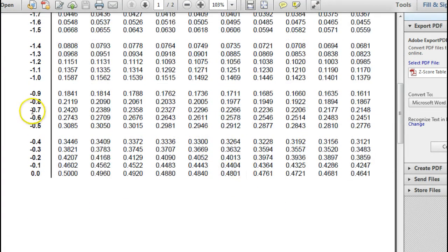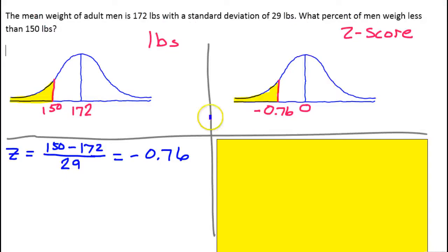This is negative 0.70, 0.71, 0.72, 0.73, 0.74, 0.75, 0.76. So this is the percentage of values to the left of this z-score. As a percent, this would be 22.36%. So we will say the percentage of z-scores to the left of negative 0.76 is 22.36%.